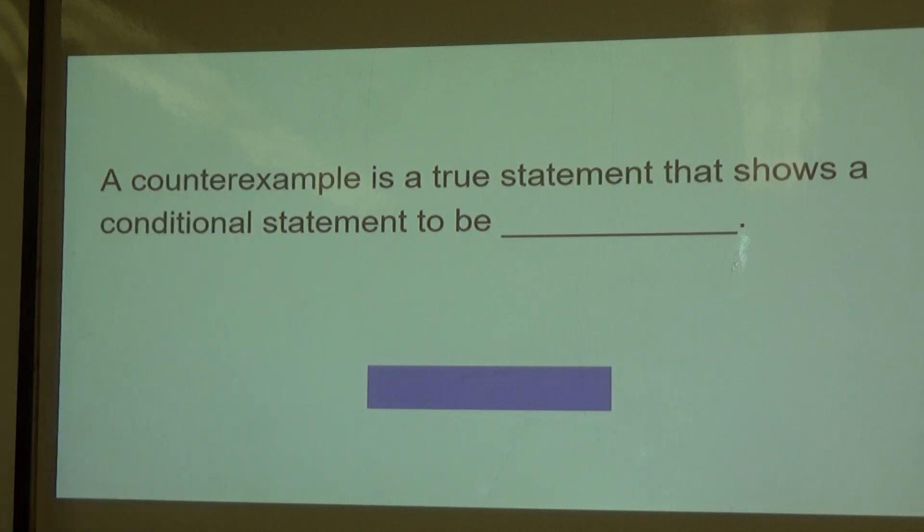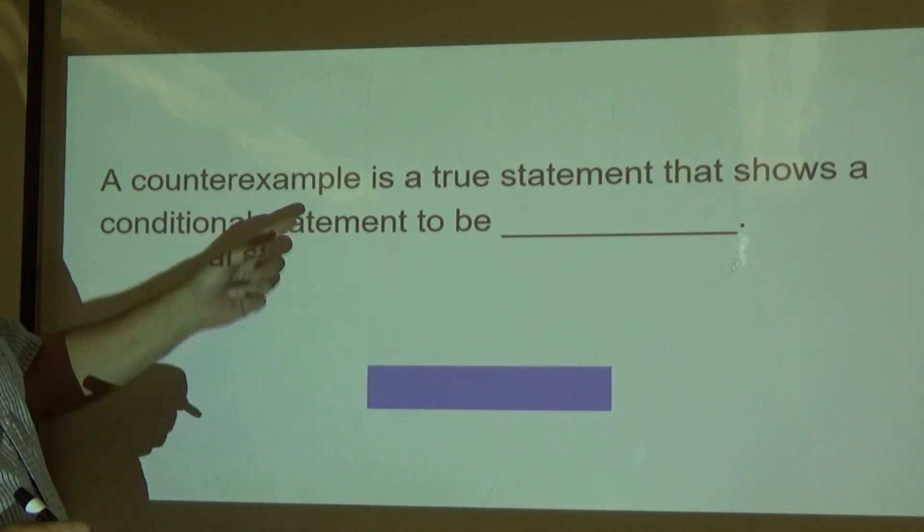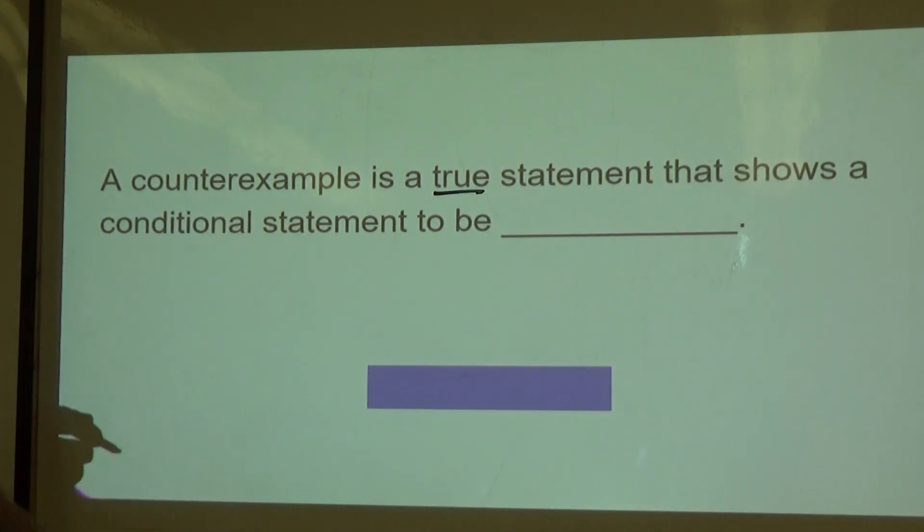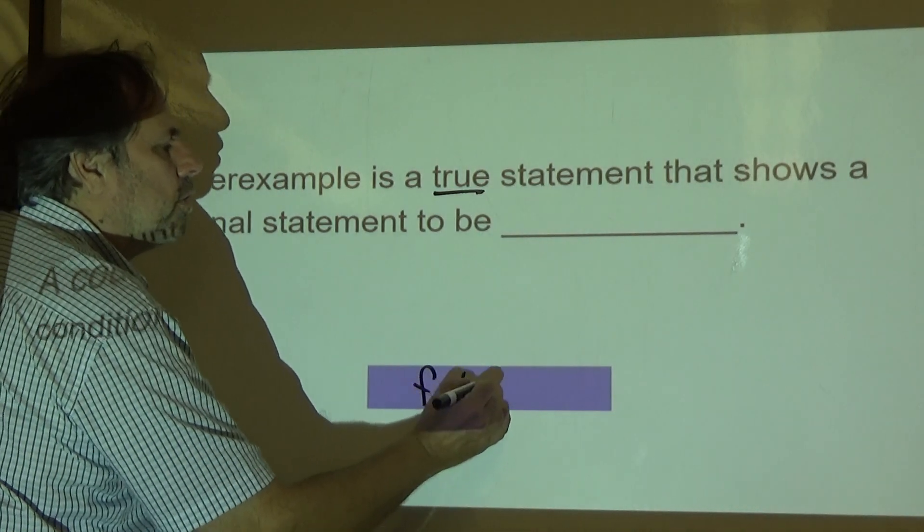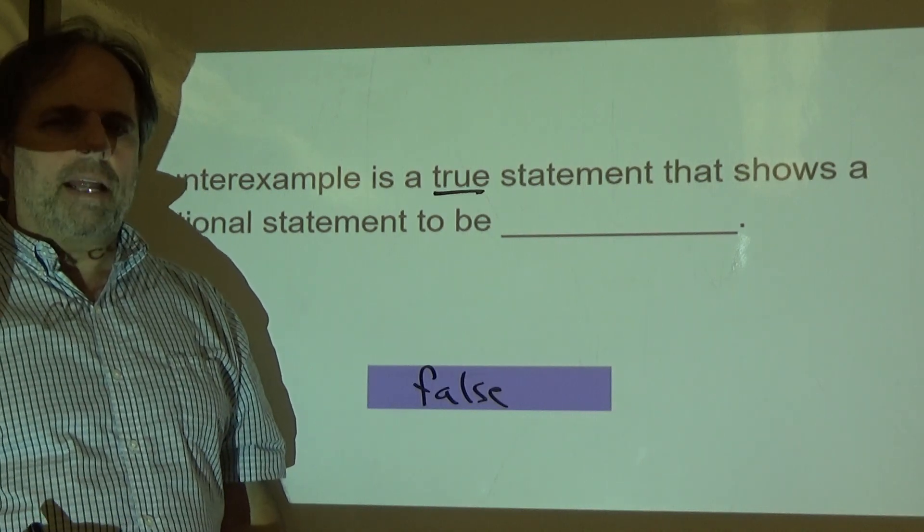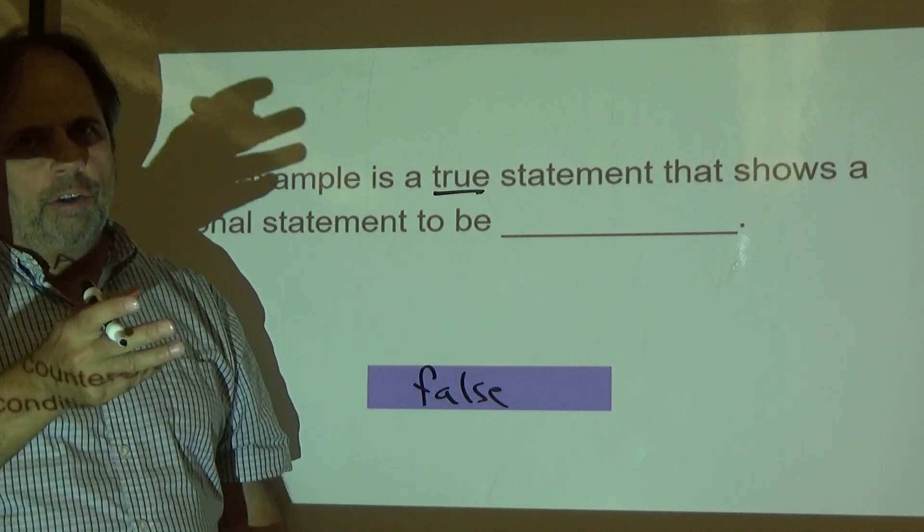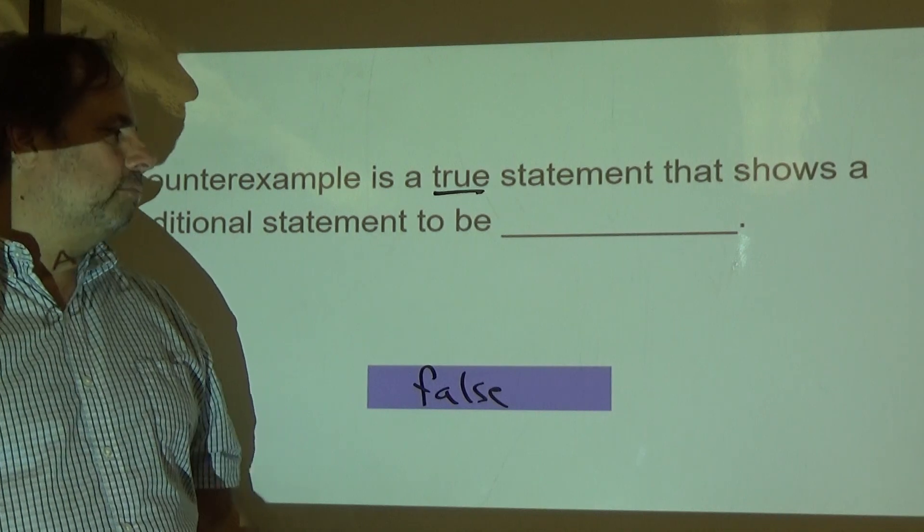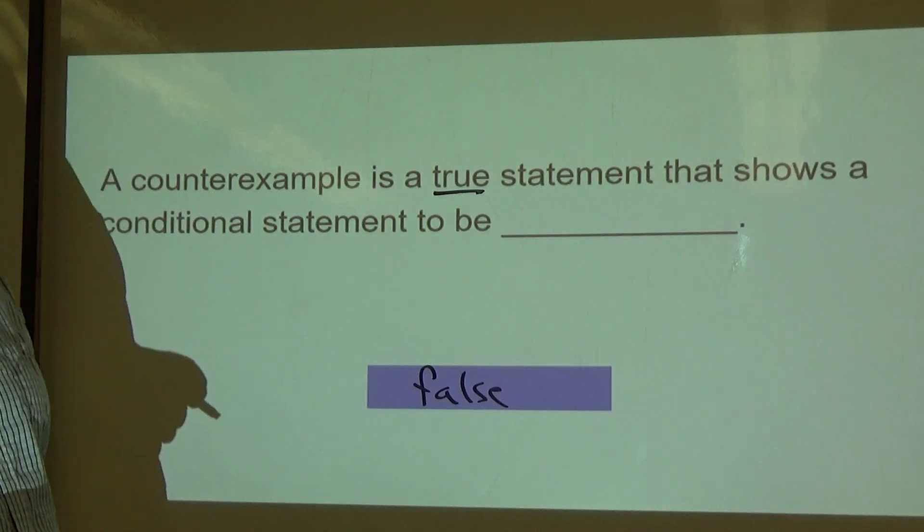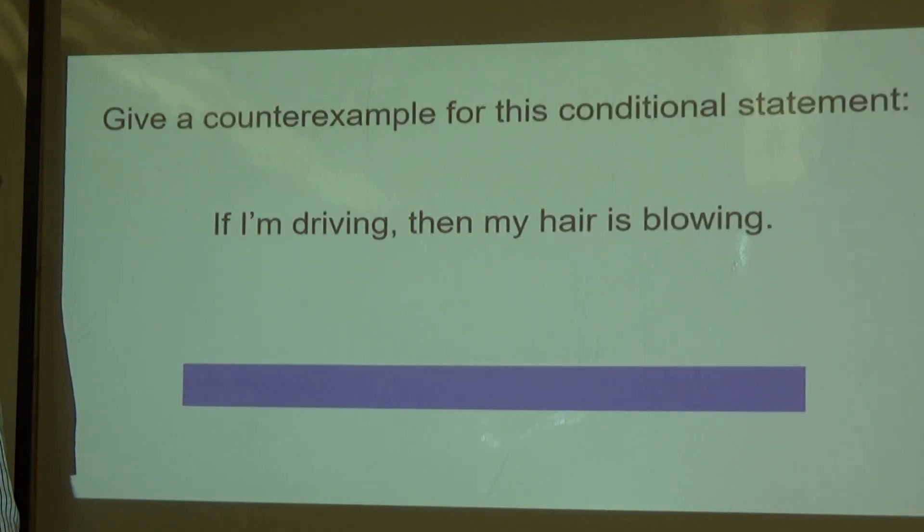A counterexample is a true statement that shows the conditional statement to be what? A counterexample is, first of all, has to be true. But it shows a conditional statement to be false. A counterexample shows that it's false. If I say, if I'm wet, then I'm swimming, you could say no. What if it's raining? Then you're wet. What if you're outside and it's raining? Boom, I just showed an example that shows that statement to be false. So a counterexample is a true statement that shows a conditional statement to be false.